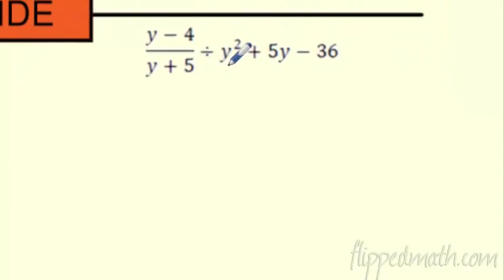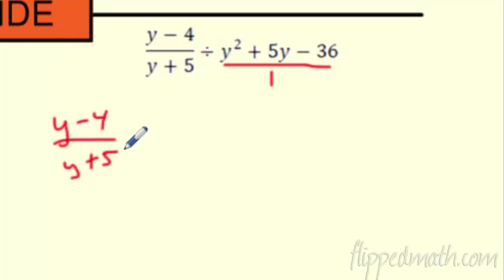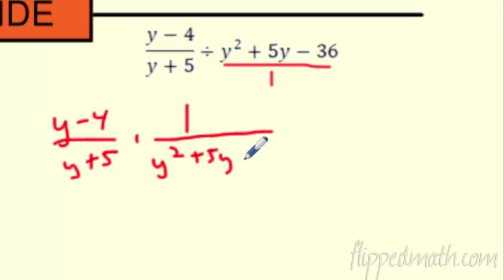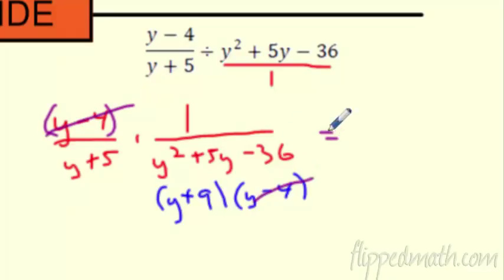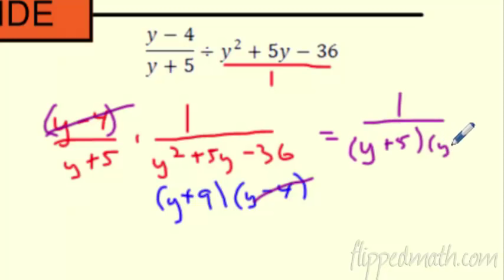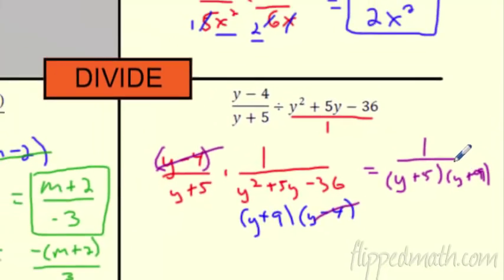Here's another one with division. Again, everything is a fraction — it's just divisible by 1. If we rewrite this, we've got y minus 4 over y plus 5, and then this second part becomes 1 over the polynomial. Now we're going to try to break it down. Does it factor? I'm guessing it does. What multiplies to 36 and adds or subtracts to 5? I'm guessing 9 and 4. So, we've got y plus 9 times y minus 4. Does anything cancel? Sure — we've got y minus 4, and this whole thing up here is going to cancel that. On top, we're left with a 1. On bottom, we've got y plus 5 and y plus 9. And we are good to go — we are killing it.